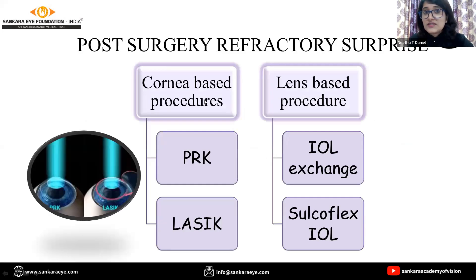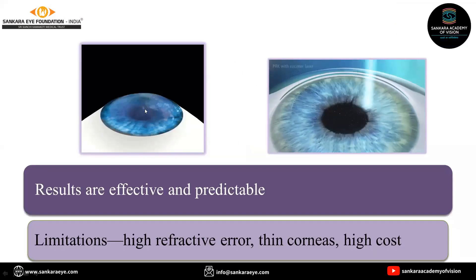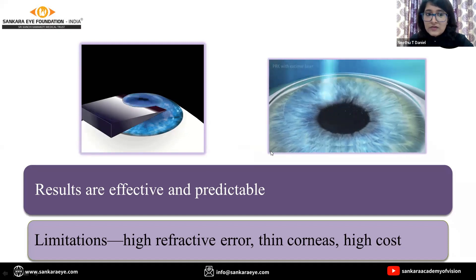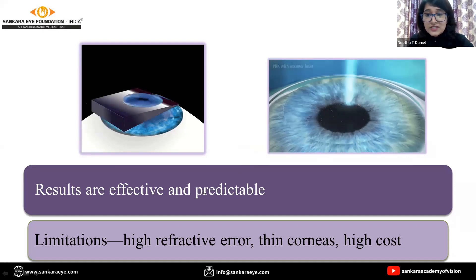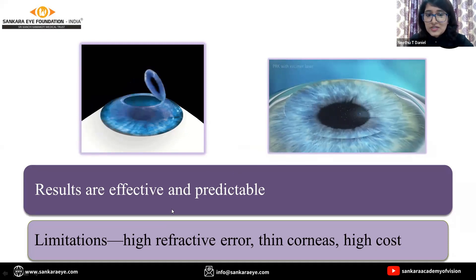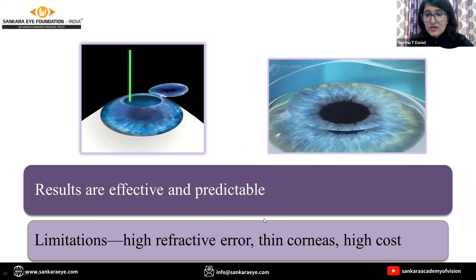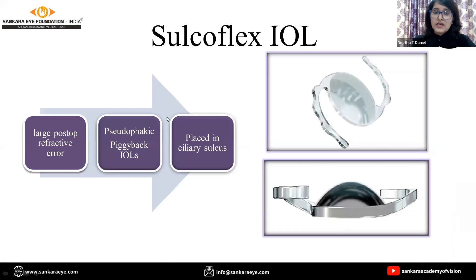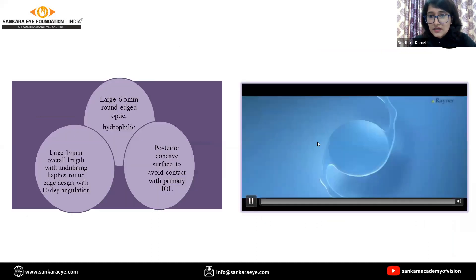What happens if there is a refractive surprise post-surgery? We have certain cornea-based procedures and lens-based procedures. In cornea-based procedures like LASIK and surface ablation procedures like PRK, the results are very effective and predictable, but there are certain limitations — if corneal thickness is not adequate, and especially the expense associated with these procedures. For lens-based procedures, we have pseudophakic piggyback IOLs, specifically the sulcoflex IOL, which is placed in the ciliary sulcus.